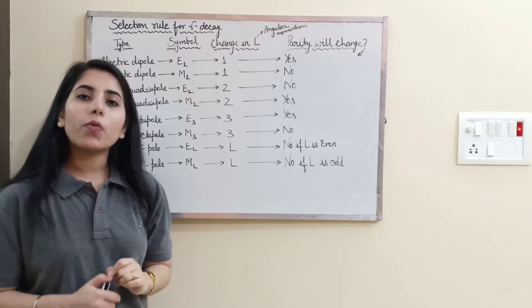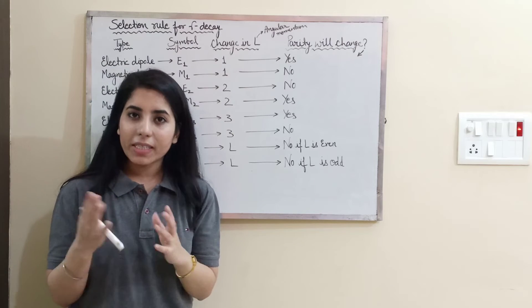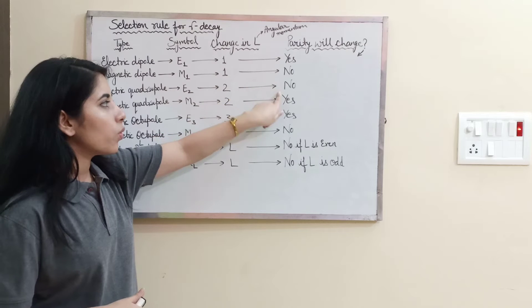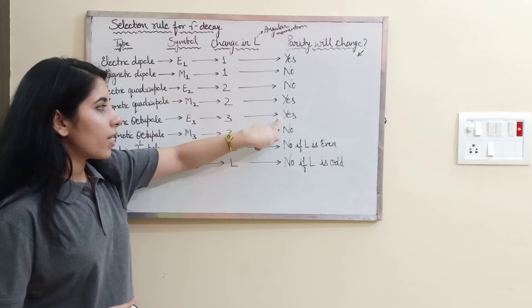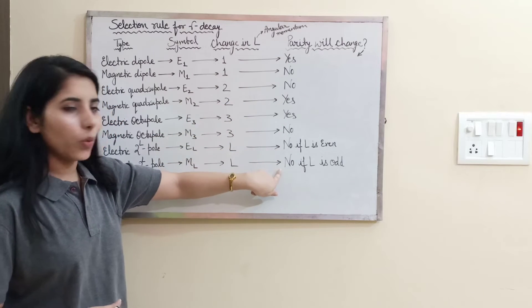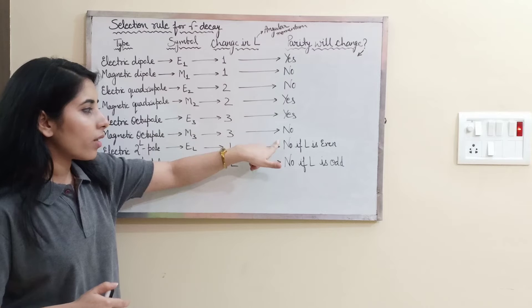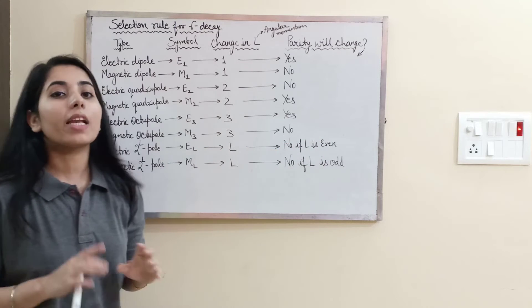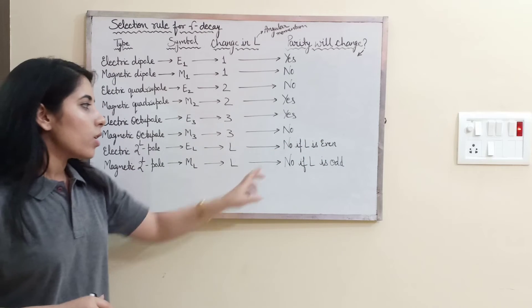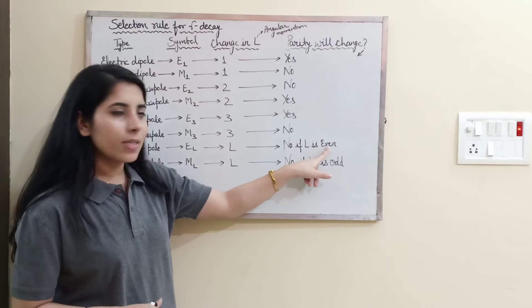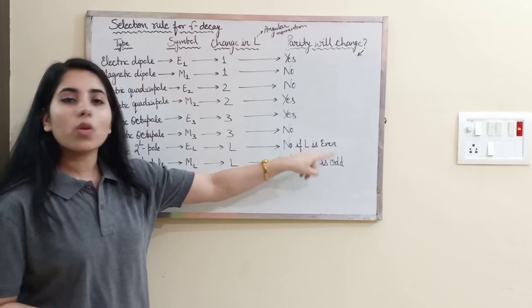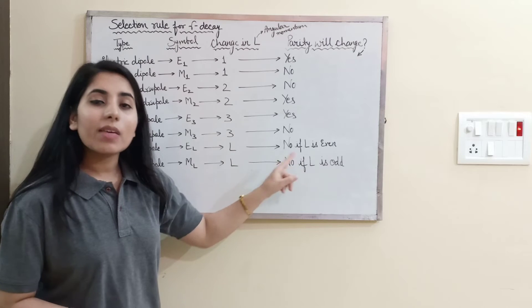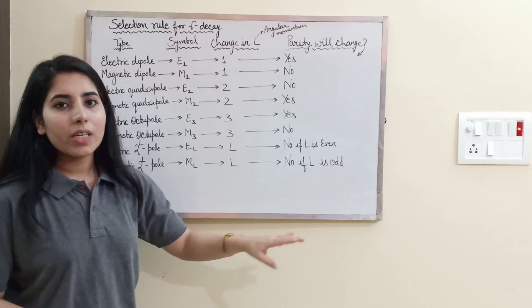For the parity change sequence, follow: yes, no, no, yes, yes, no, no. For the general EL and ML case: if L is even, no parity change for EL; if L is odd, yes parity change for EL. For ML: no parity change if L is odd, yes if L is even.